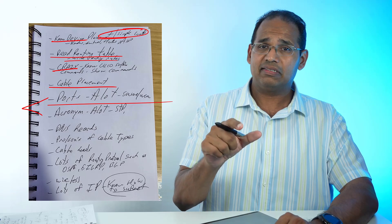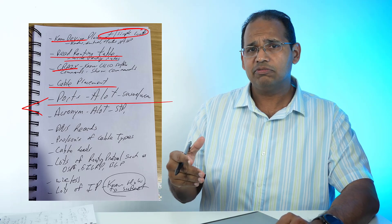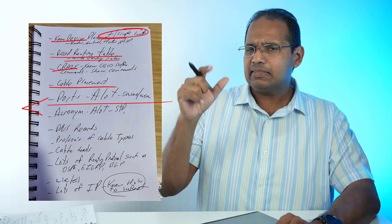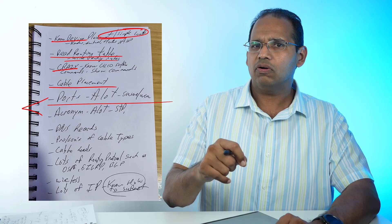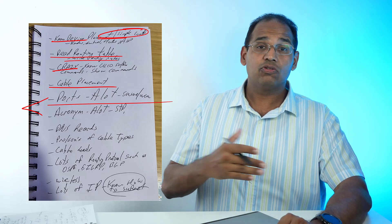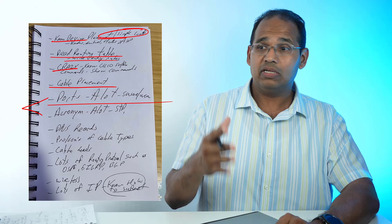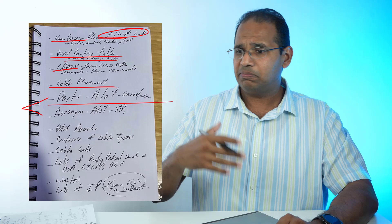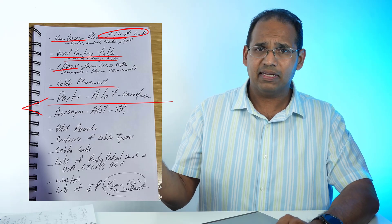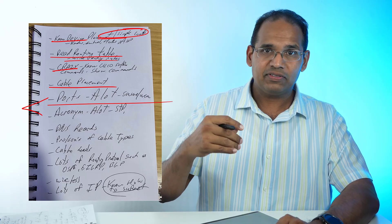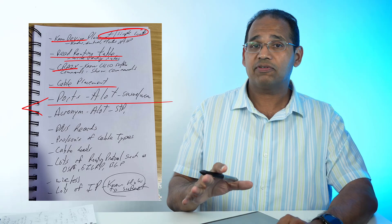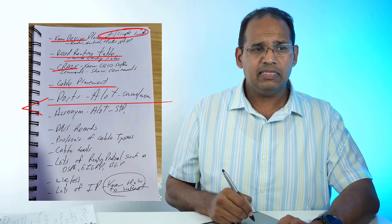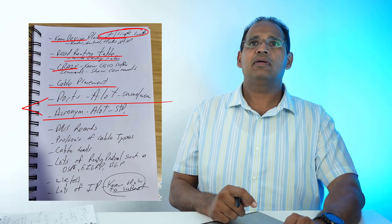You better know your ports. The good news is CompTIA in the objectives tells you the ports you need to know. There's a table in objective 1.7, I believe. You need to know all of them—110, 143, like POP, IMAP, 80 for HTTP, 443 for HTTPS, LDAP, FTP, SSH. All these different protocols, you need to know the ports.